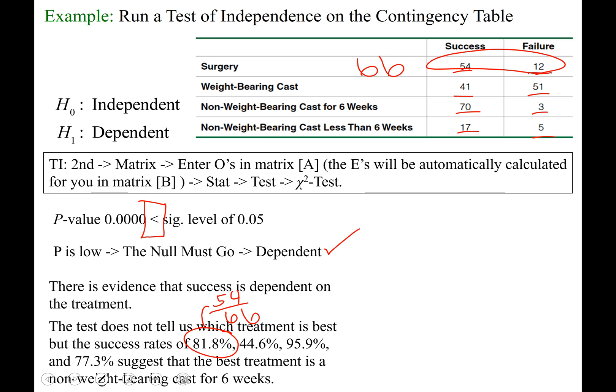Let's just check that using our calculators. 54 divided by 66, move the decimal twice, and yes, you get 81.8. Okay, weight-bearing cast, to calculate that success rate, you would do 41 divided by the total number, which looks like 92 people went through the weight-bearing cast treatment. 44.6% success with that treatment.